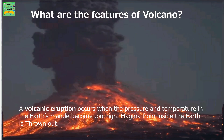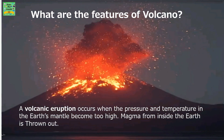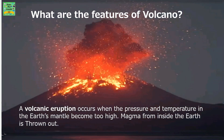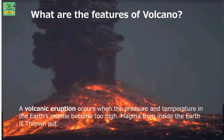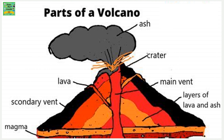What are the features of a volcano? A volcanic eruption occurs when the pressure and temperature in the earth's mantle becomes too high, and magma from inside the earth is thrown out. This picture depicts the parts of a volcano. Ash comes out of the volcano along with magma. The crater is present on top of the volcano. The main vent is the opening or hole within the volcano through which the magma comes out. Layers of lava and ash make up the volcano. Magma is called lava when it comes out of the volcano and is on the ground. Magma is present inside the volcano.